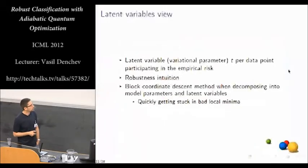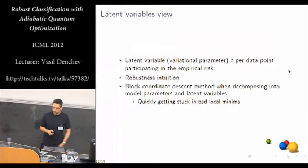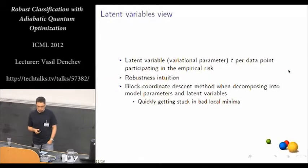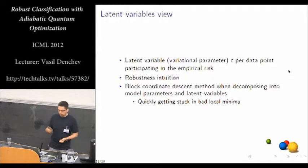Also, it can be easily seen that a block coordinate descent method may be applied in this situation if we decompose into model parameters and latent variables. And we tried this, but we're quickly getting stuck in bad local minima. So this was another indication that this is a hard problem that may really benefit from being solved by quantum optimization.